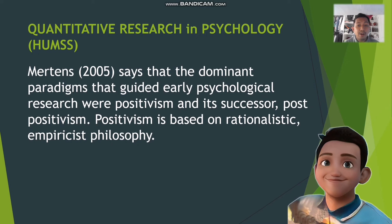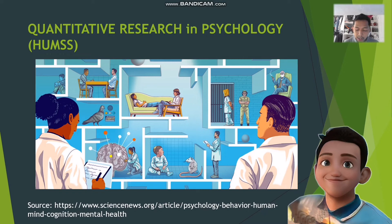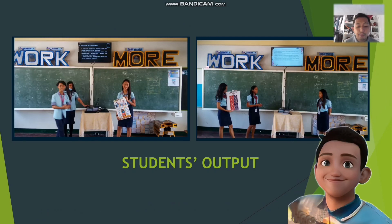Neeterns (2005) states that the dominant paradigm guiding earlier psychological research was positivism and its successor, post-positivism. Positivism is based on rationalistic empiricist philosophy. Its underlying assumptions include that the social world can be studied in the same way as the natural world, that there is a value-free method for studying the social world, and that causal explanations can be provided. The expected student output is to study and create innovations that can be used in daily life situations.